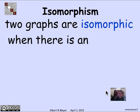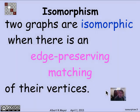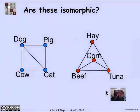What isomorphism means is that all that matters between two graphs are their connections. Graphs with the same connections among the same number of vertices are said to be isomorphic. To say it more precisely, two graphs are isomorphic when there's an edge-preserving matching — meaning a bijection — between their vertices, where edge-preserving means that where there's an edge on one side, there's an edge between the corresponding vertices on the other side.